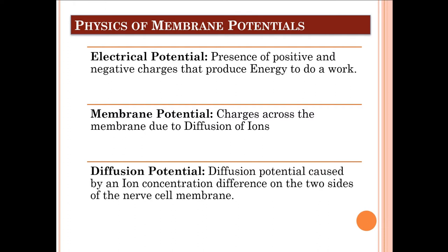Diffusion potential is caused by an ion concentration difference on the two sides of the nerve cell membrane. Diffusion is the movement of ions from a higher concentration area to a lower concentration area through a semi-permeable membrane — one that is permeable to some ions but not all. Diffusion potential is created when some ions move from one side to another and create a concentration difference across the membrane.